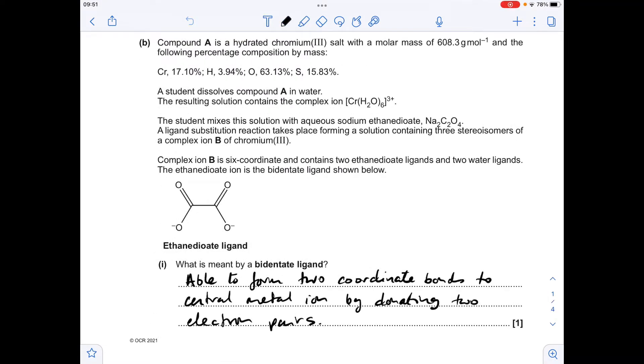Moving on to part B, what's meant by a bidentate ligand? That's a ligand that's able to form two coordinate bonds, or you could say two dative covalent bonds, to a central metal ion by donating two electron pairs.